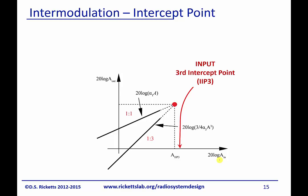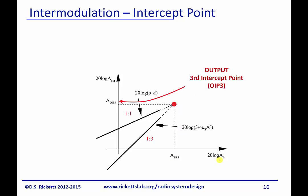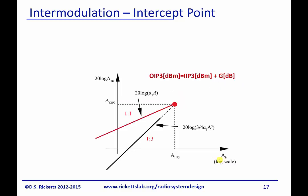So we could talk about the input intercept point. And so this is just what input amplitude is this intersect point at. So that would be the IIP3. Or we could talk about the output intersect point, or the OIP3. Either one tell us about the same point. And the OIP3 is simply the IIP3 plus the gain. And that's just our definition of P in plus G equals P out.